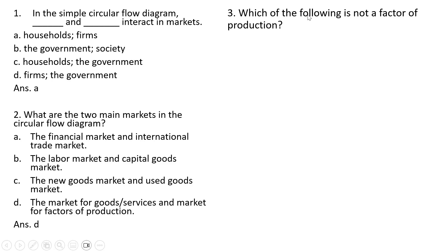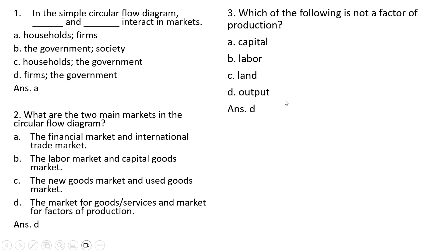Which of the following is not a factor of production? The answer is D — output. Output is not a factor of production.